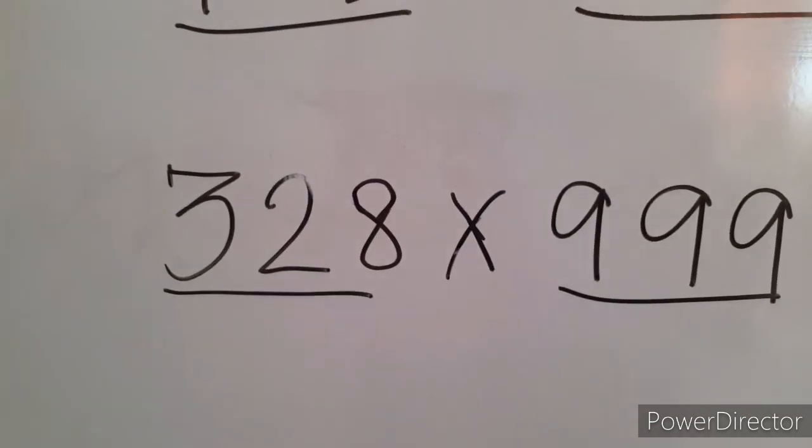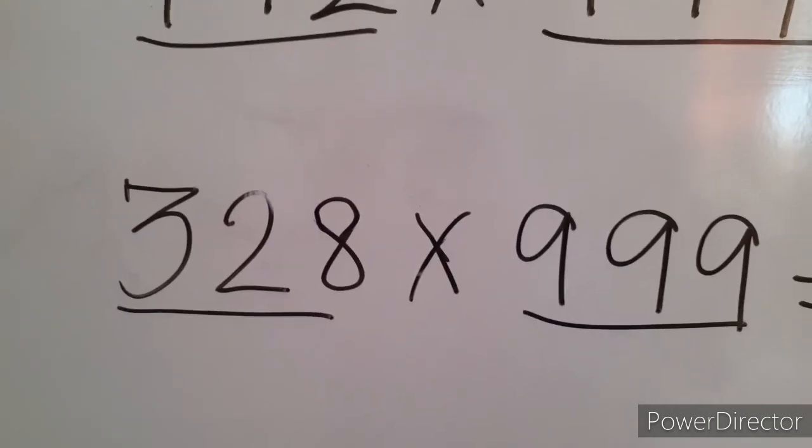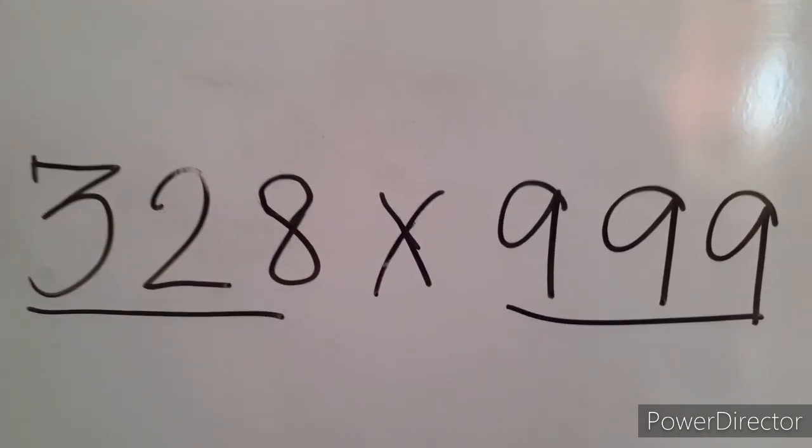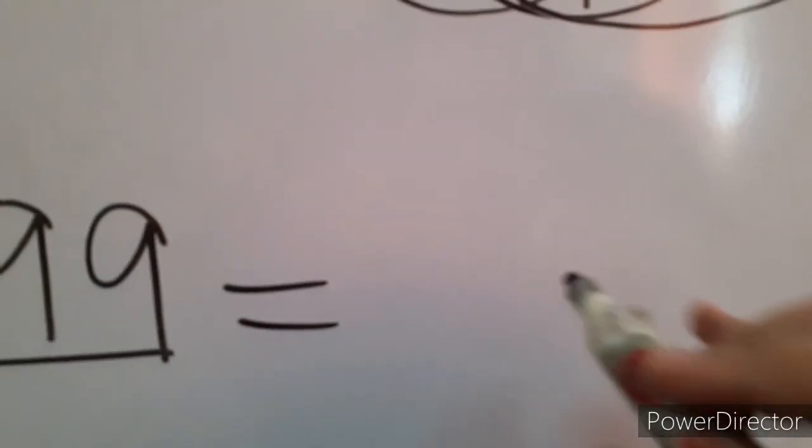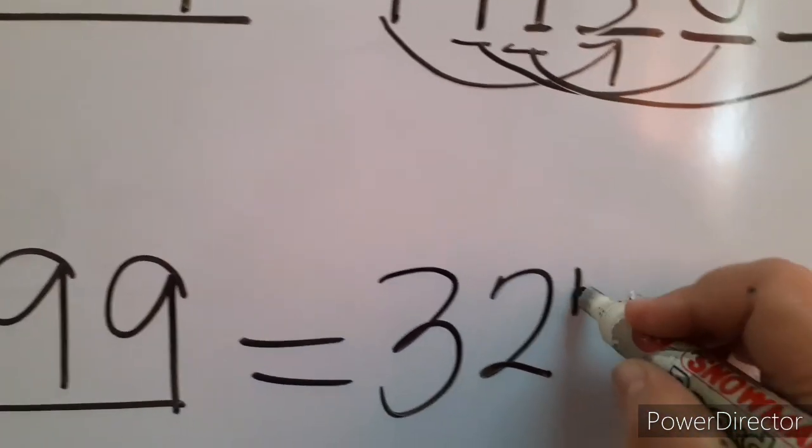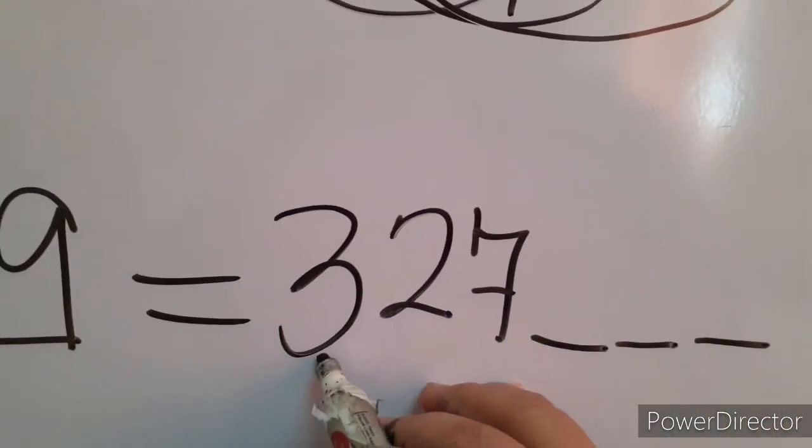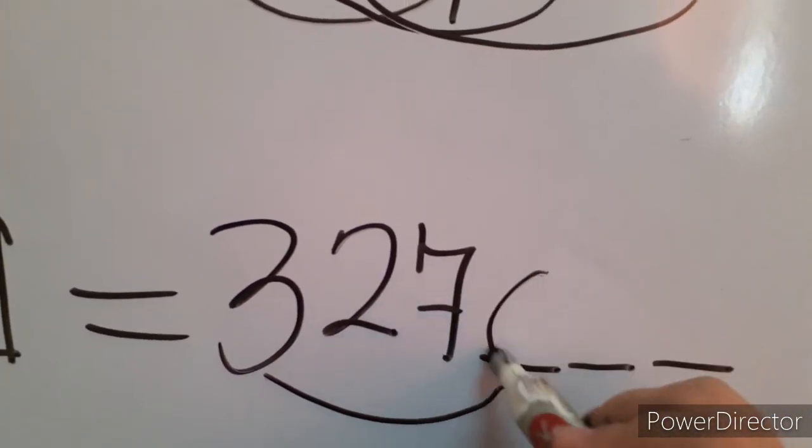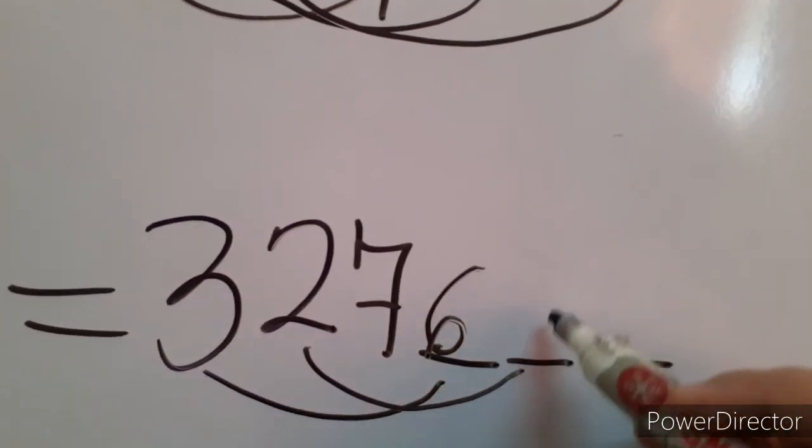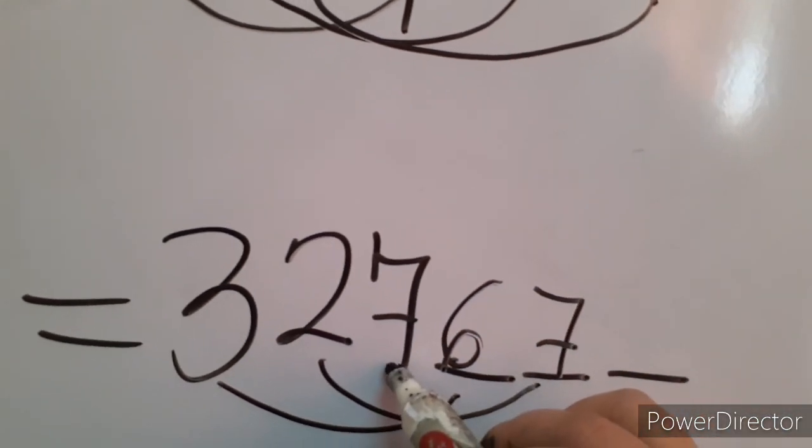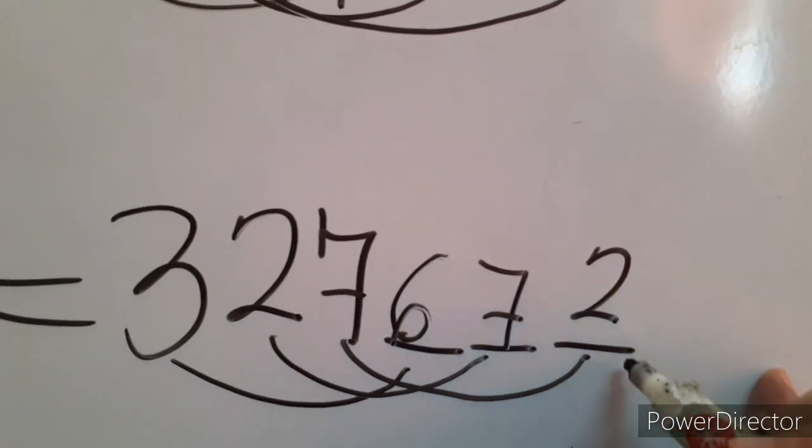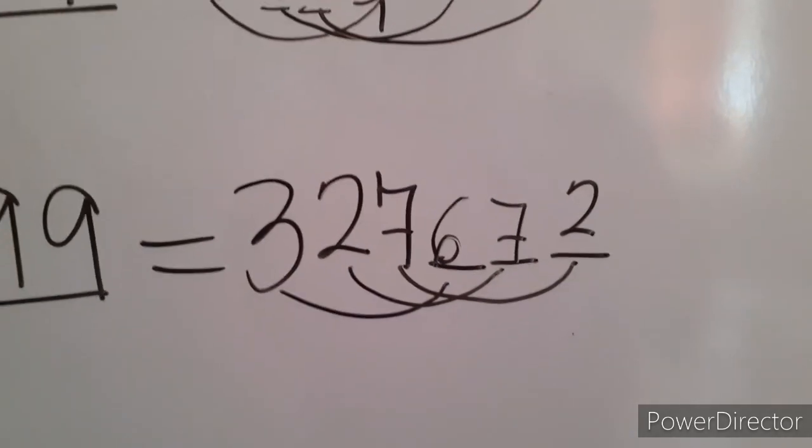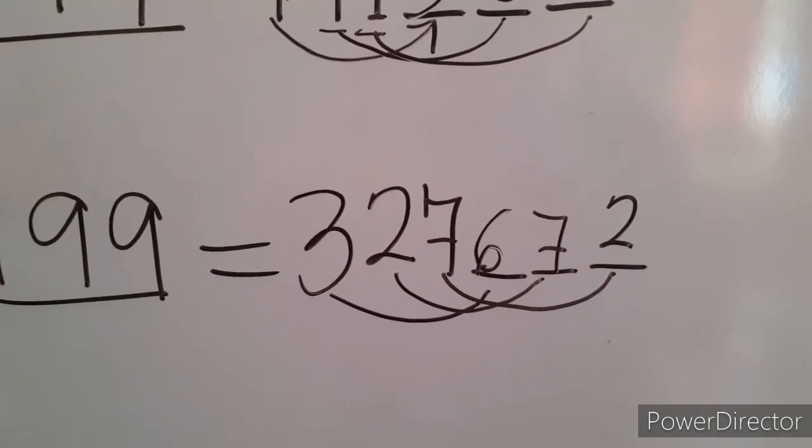So, let's have another 3 digits times 3 nines or 999. One number smaller than 328 is 327. So, let us write here 327. Now, we need 3 digits. So, when we pair, it will give a sum of 9. 3 plus blank is 9. That is 6. 2 plus blank is 9. That is 7. 7 plus blank is 9. That is 2. Therefore, 328 times 999 is equal to 327,672.